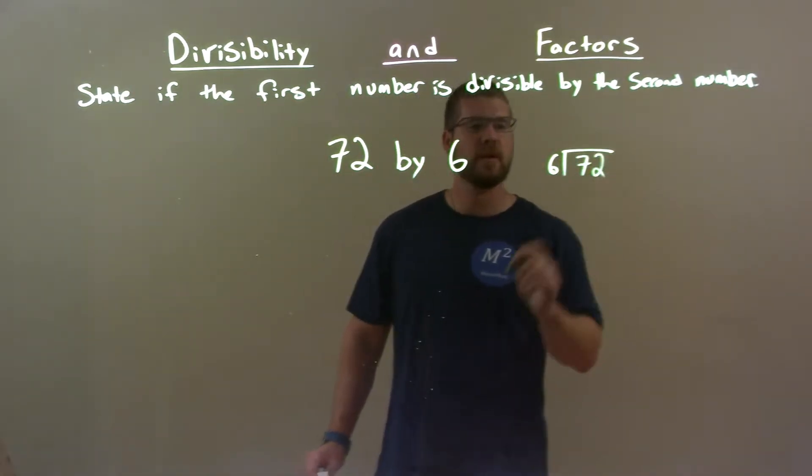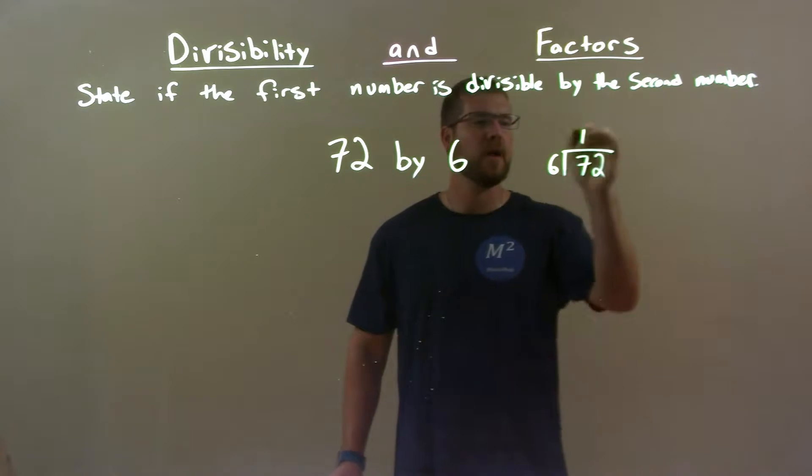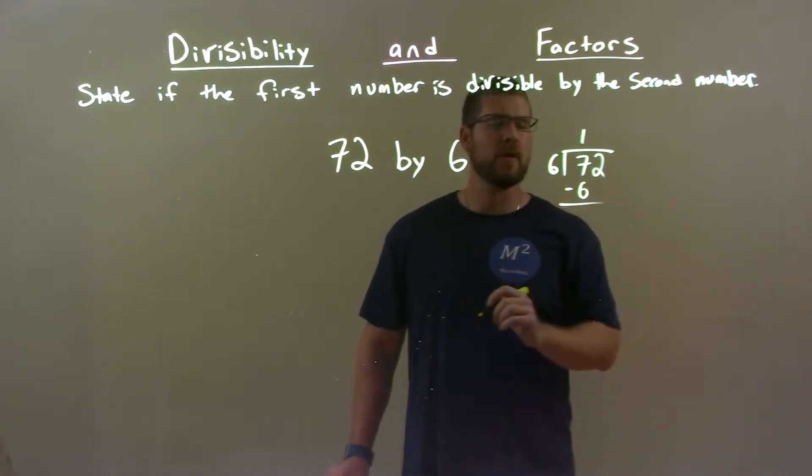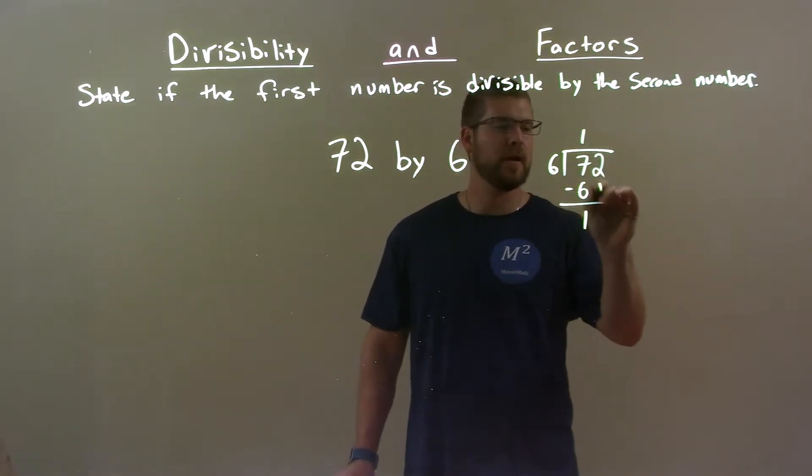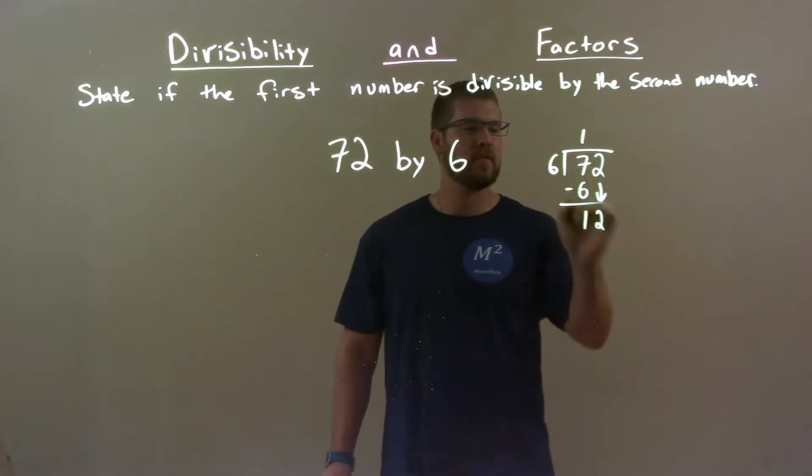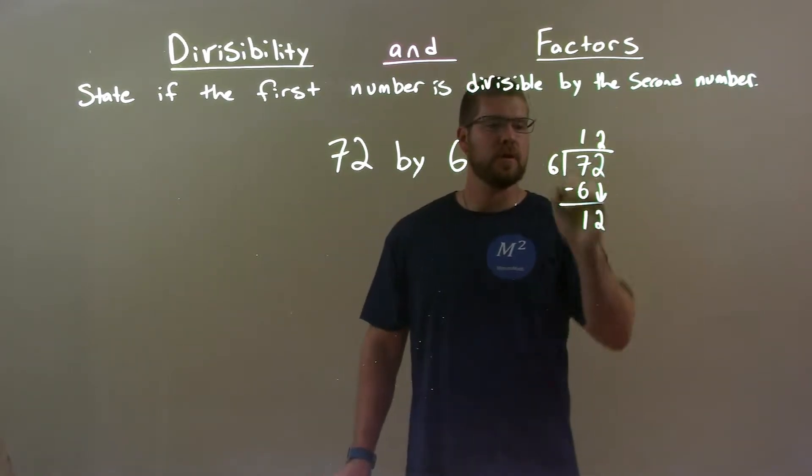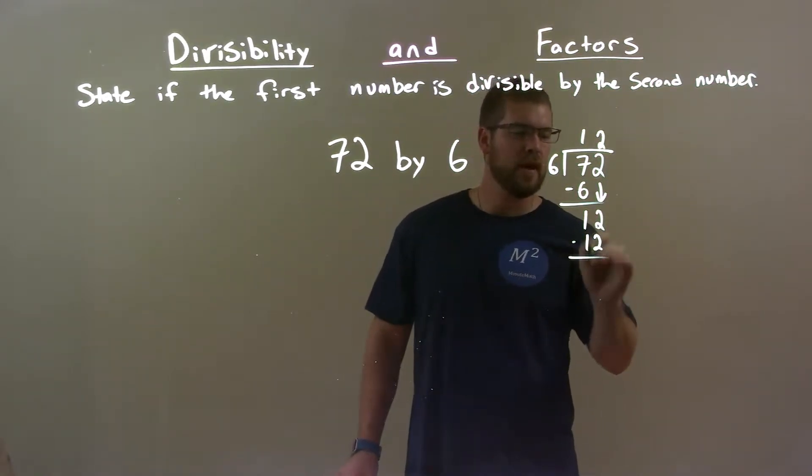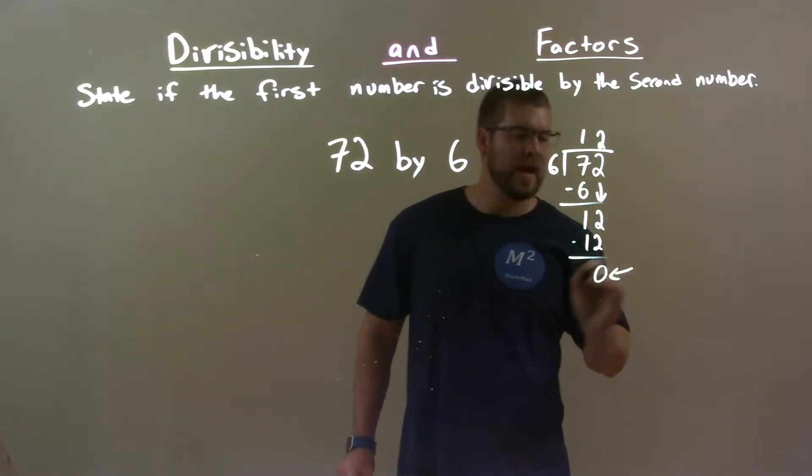So we do some long division here. 6 goes into 7 one time, and 1 times 6 is 6. Subtract. 7 minus 6 is 1, bringing down the 2. 6 goes into 12 two times. 2 times 6 is 12. Subtract,